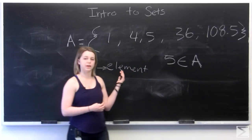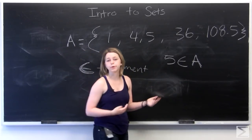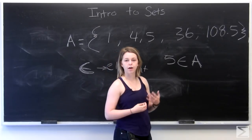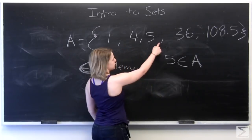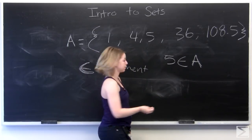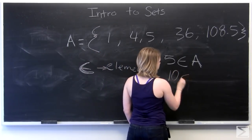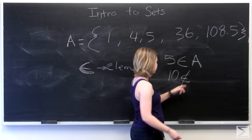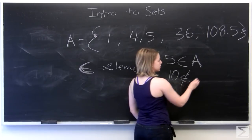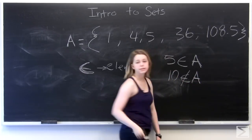And we can also use the opposite of this symbol to show when an item is not in a certain set. So 10 is missing from our set, for example. So 10, we just strike through our curved E here. So 10 is not an element of set A.